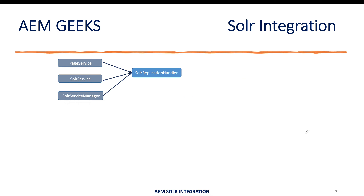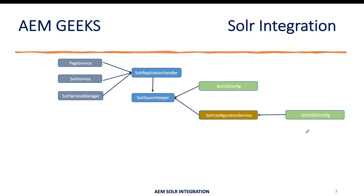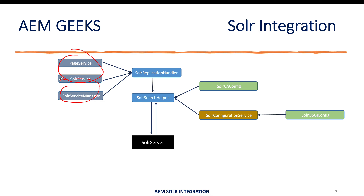For the replication or event handler: it executes when you publish or unpublish a page. On publish, it indexes the data for that page into Solr; on unpublish, it removes that data from Solr. I'll get the context-aware configuration and OSGi configuration, then once I have all the data, I make the Solr calls. Most of the code will be reusable — the services are shared and only minor changes are made when making the actual Solr call.